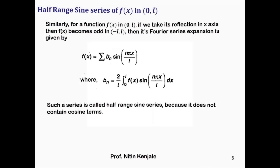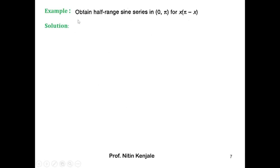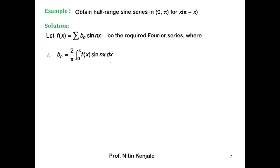Now we will see an example. The question is to find the half range sine series of x(π − x) in the interval 0 to π. Let us assume f(x) equals summation b_n sin(nx) as the required half range sine series of f(x) in the interval 0 to π, where b_n is given by 2/π times the integral of f(x) sin(nx) dx over 0 to π. Here f(x) is x(π − x), so this becomes 2/π times the integral of x(π − x) sin(nx) dx over 0 to π.